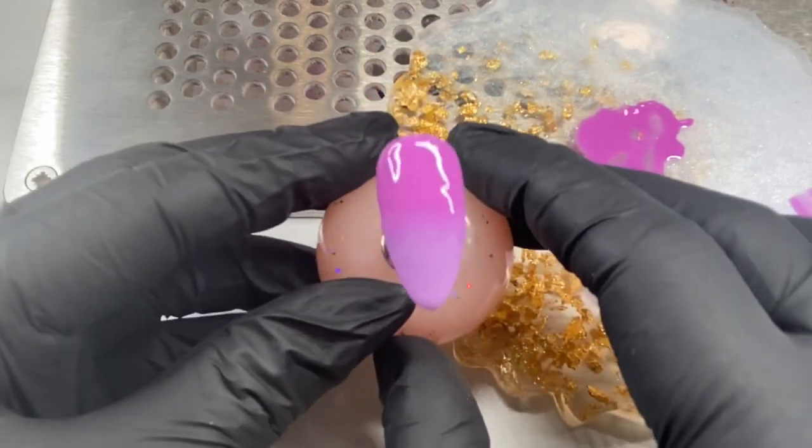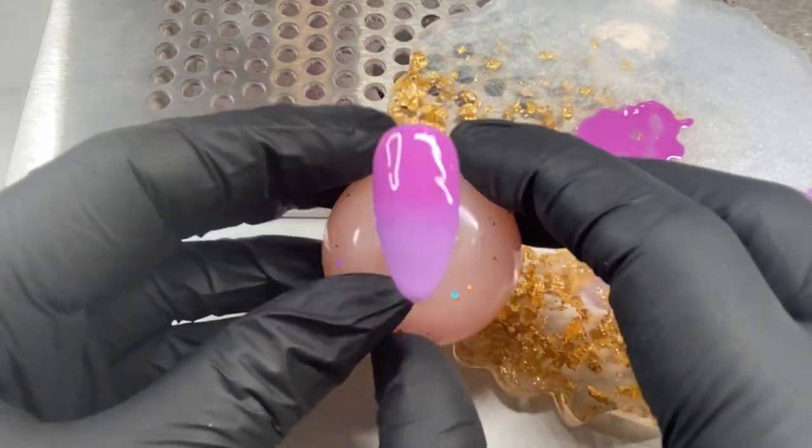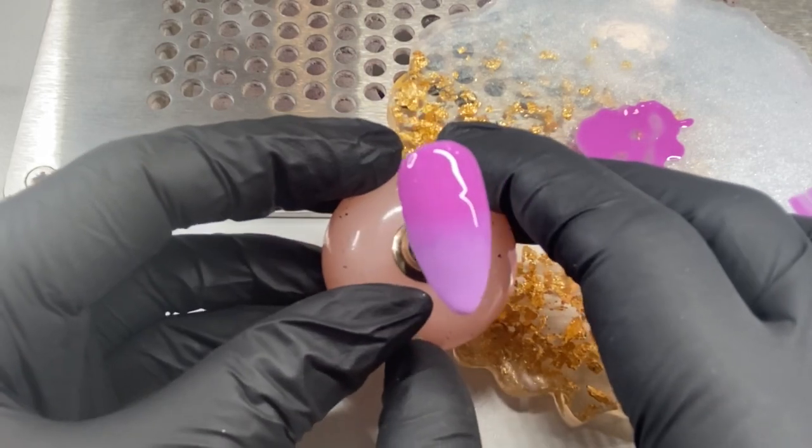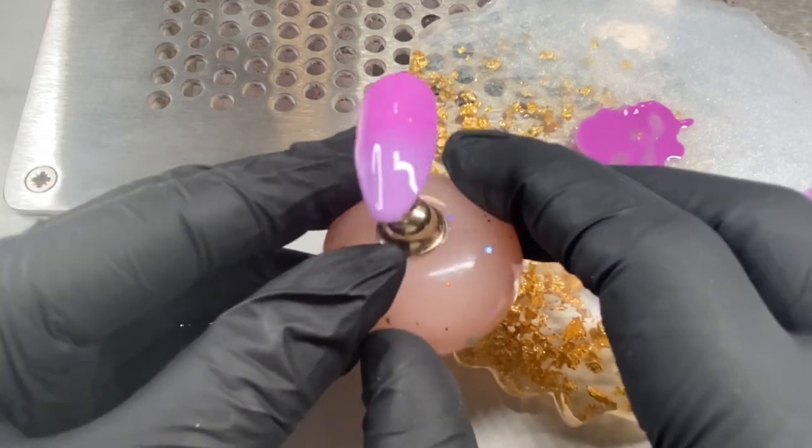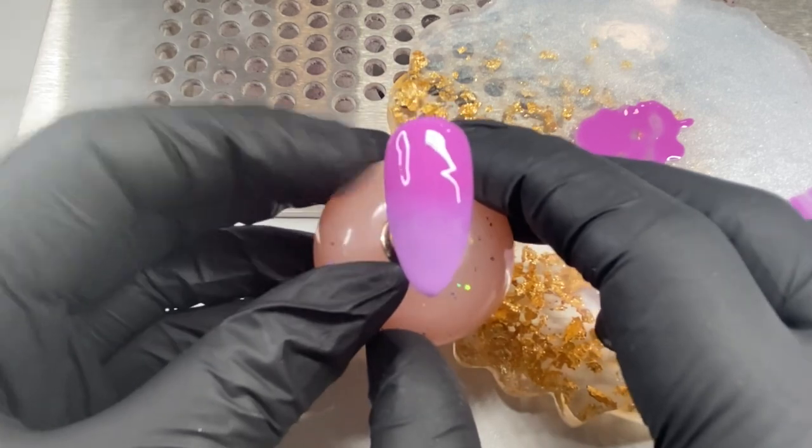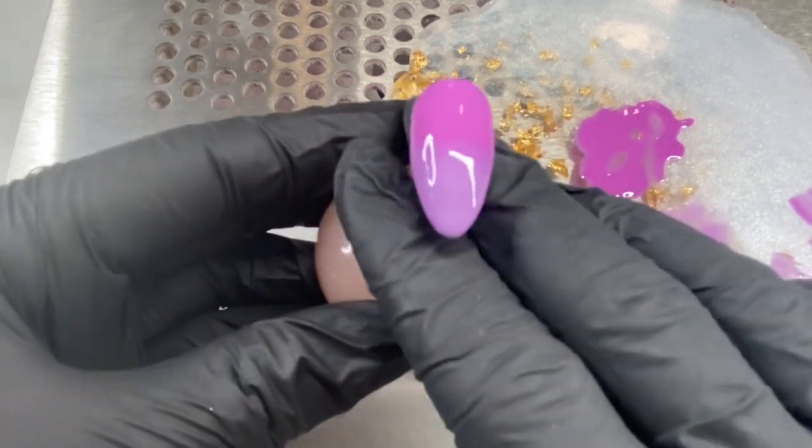That's our second coat applied and blended in. I think with these two colors we can get away with two coats. If you still think there needs to be more blend, you can go with a third coat, but I'm going to pop it into the Magpie lamp.